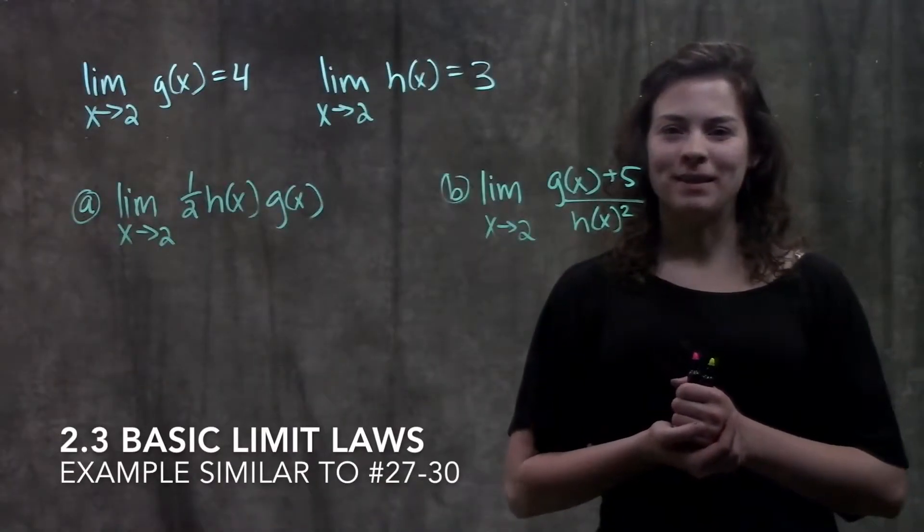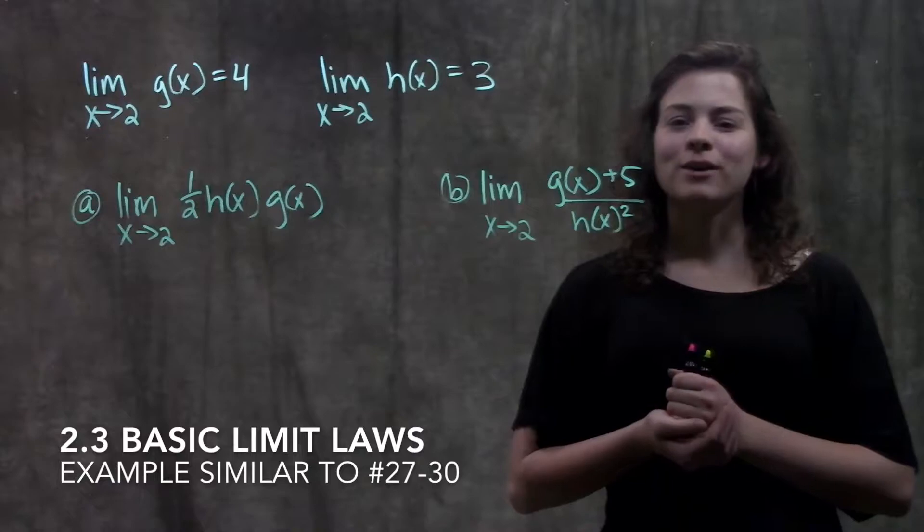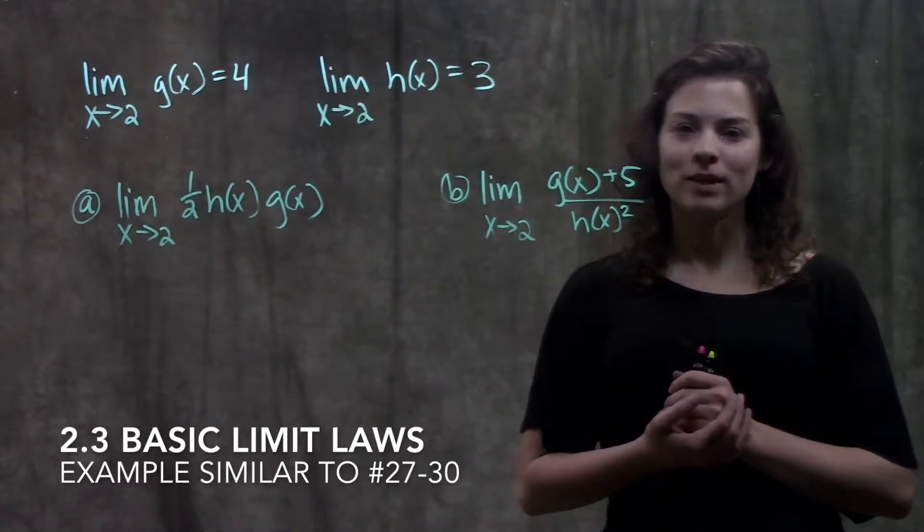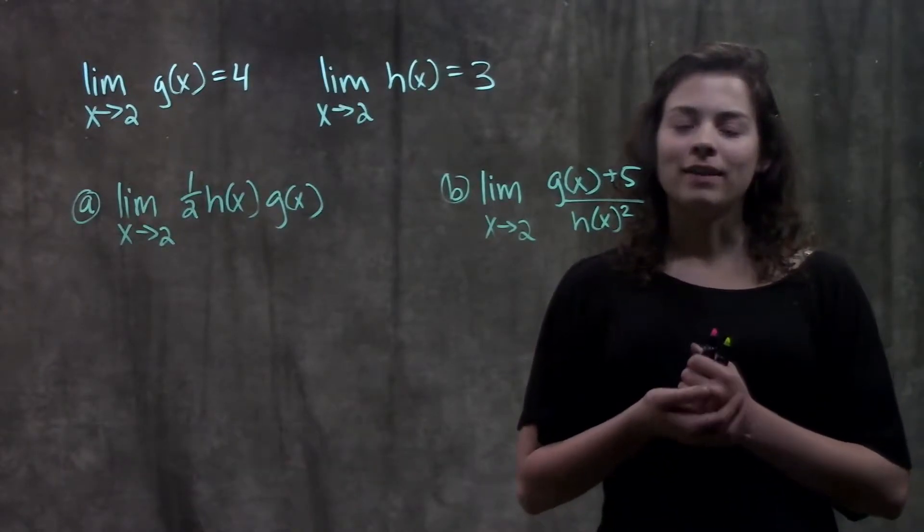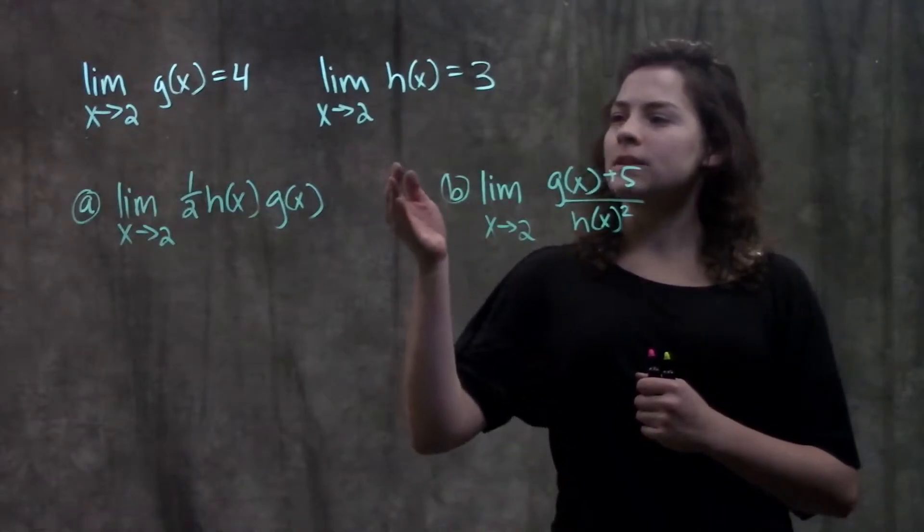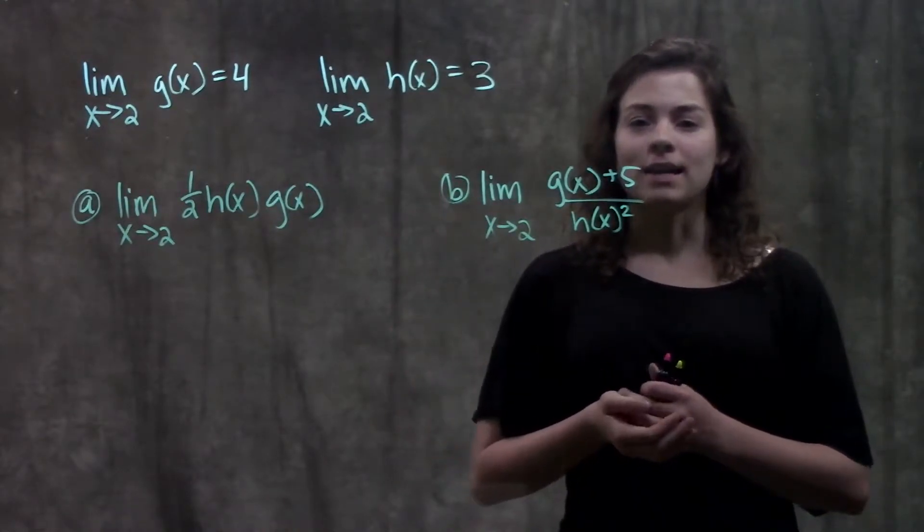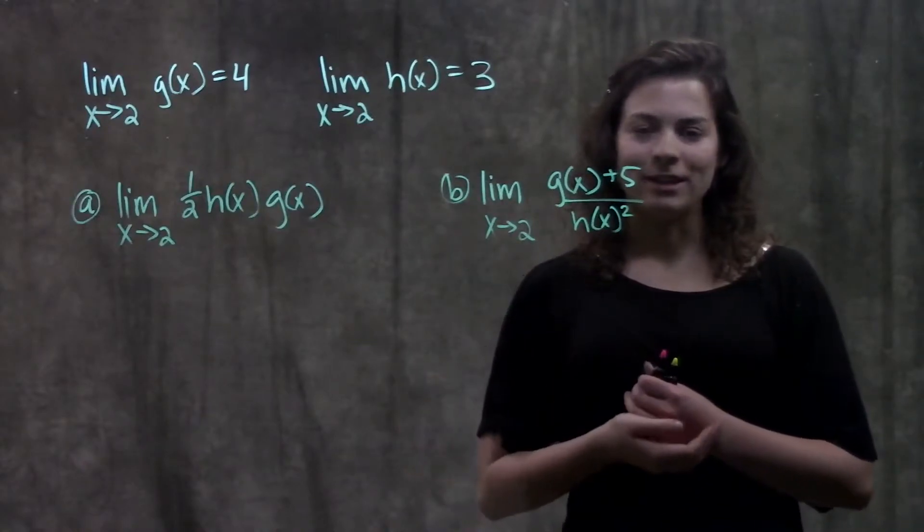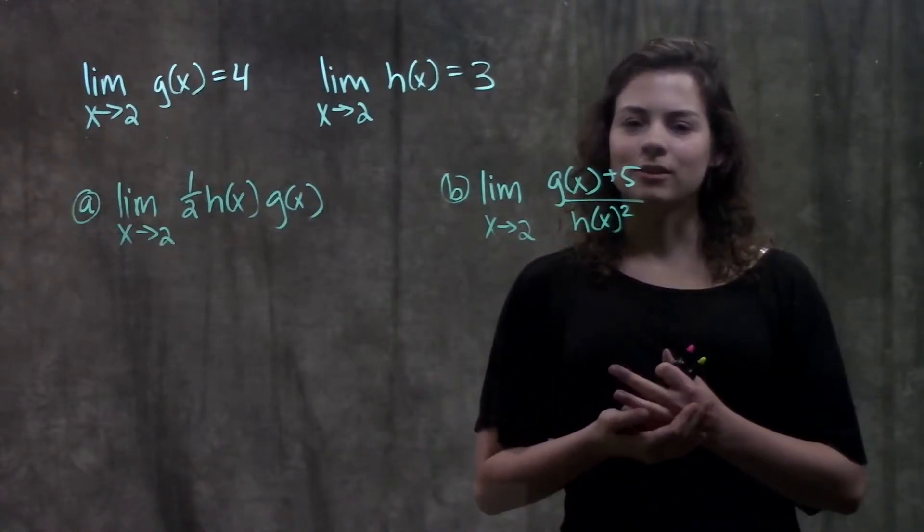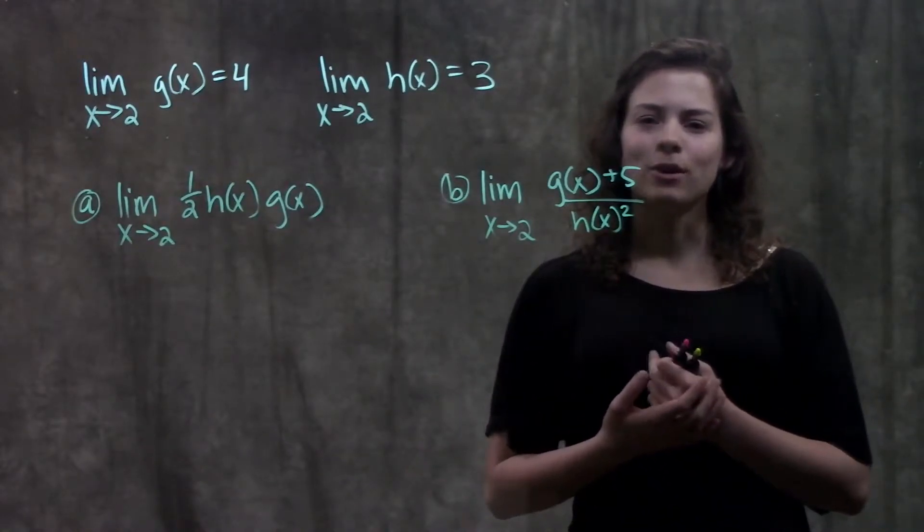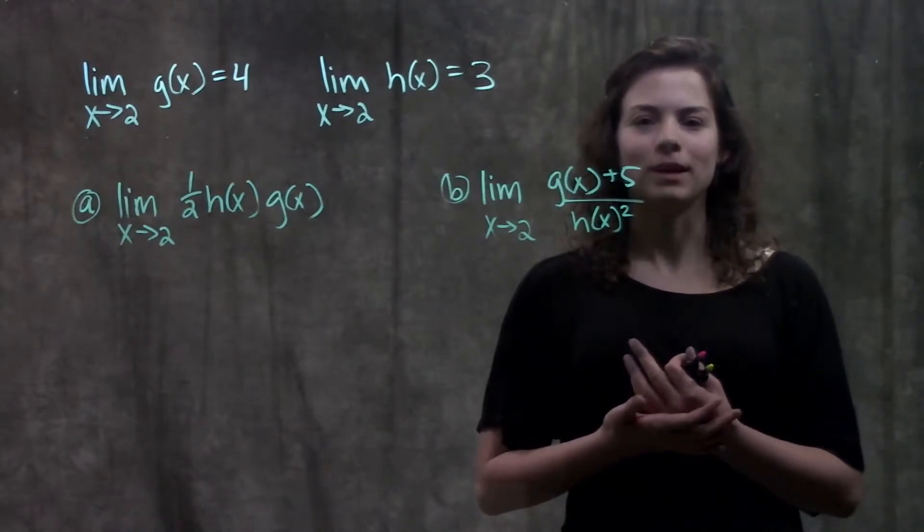This is section 2.3 basic limit laws. In this video, we're going to go through an example that's really similar to number 27 through 30 in your book, and this is a problem where it's telling us the limits of these undefined functions, and it's asking us to find these other limits using the information given. So at first this looks super confusing, but actually once you go through this problem you realize it's pretty simple to solve.